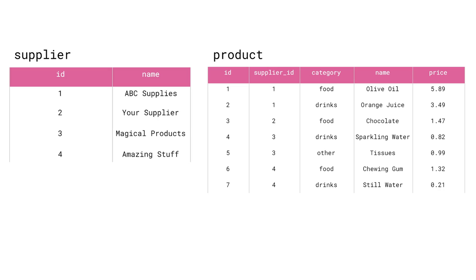The opposite of EXISTS is NOT EXISTS. It returns true if there is no row returned from the subquery. Let's see how that works in practice. We now want to show the names of all suppliers who only provide cheap products under $1. In other words, we want to show the names of suppliers who do not provide any products more expensive than $1.